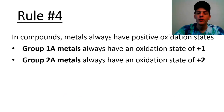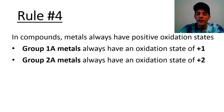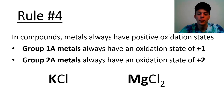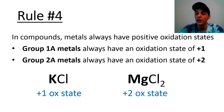Rule number four has to do with metals. Metals always have positive oxidation states. Specifically, Group 1A metals (alkali metals) always have an oxidation state of +1, and Group 2A metals (alkaline earth metals) always have oxidation states of +2. So potassium in potassium chloride has an oxidation state of +1, and magnesium in magnesium chloride has an oxidation state of +2.